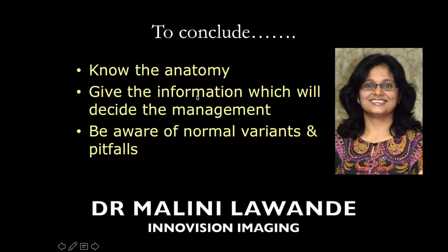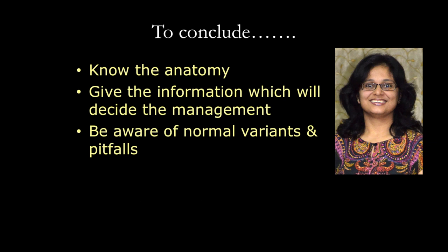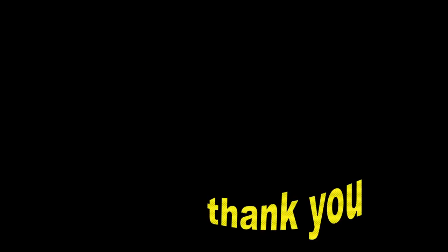To conclude, we need to know the anatomy very well. We need to provide information that will guide management — that is, the status of the labrum, the status of the capsule, and the status of the bone, including any bone loss on the humeral side as well as on the glenoid side. We also need to be aware of normal variants and pitfalls. Thank you.